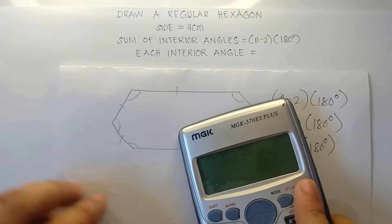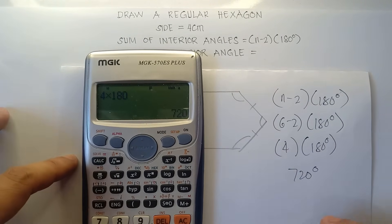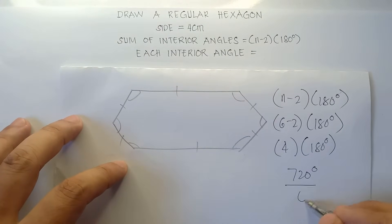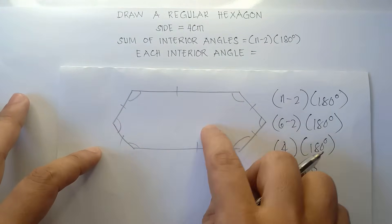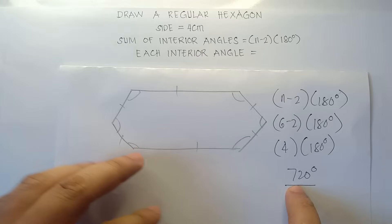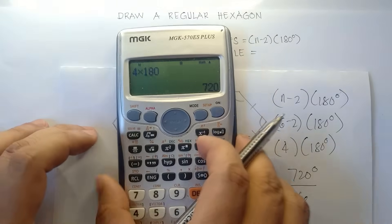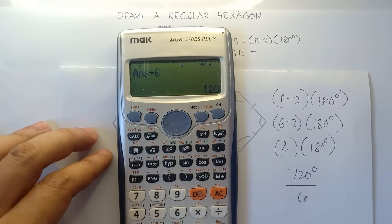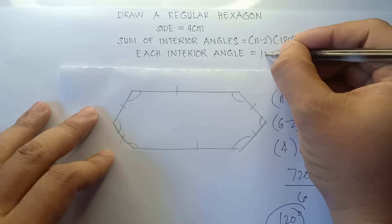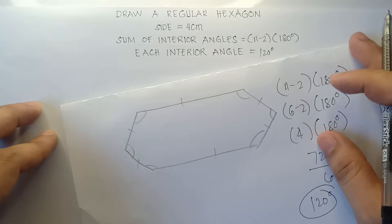Let's double check using the calculator: 4 times 180 is 720 degrees. The sum of the interior angles of any hexagon is 720 degrees. Now since we want equal interior angles, we divide by 6. So 720 divided by 6, the answer is 120 degrees. Therefore, each interior angle is 120 degrees. Now we can draw the regular hexagon.